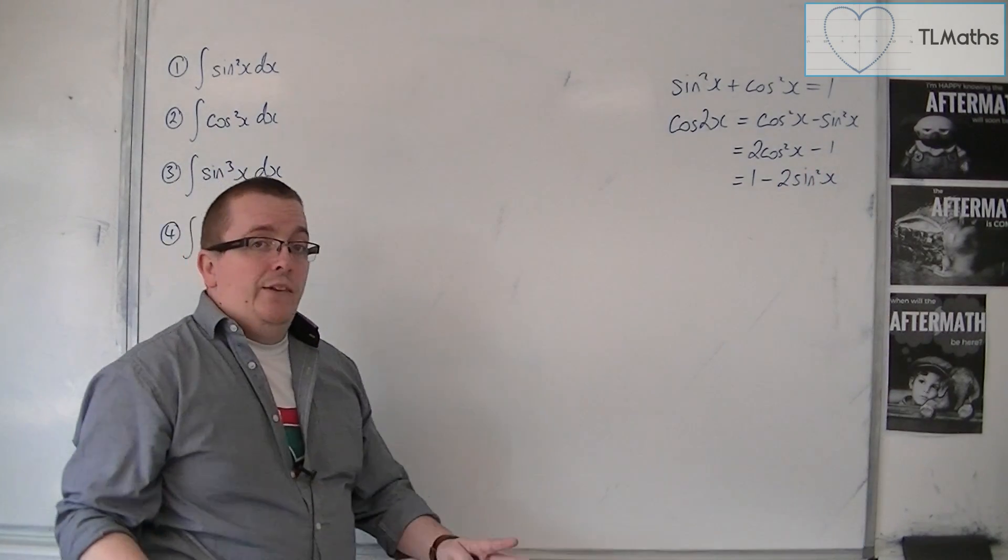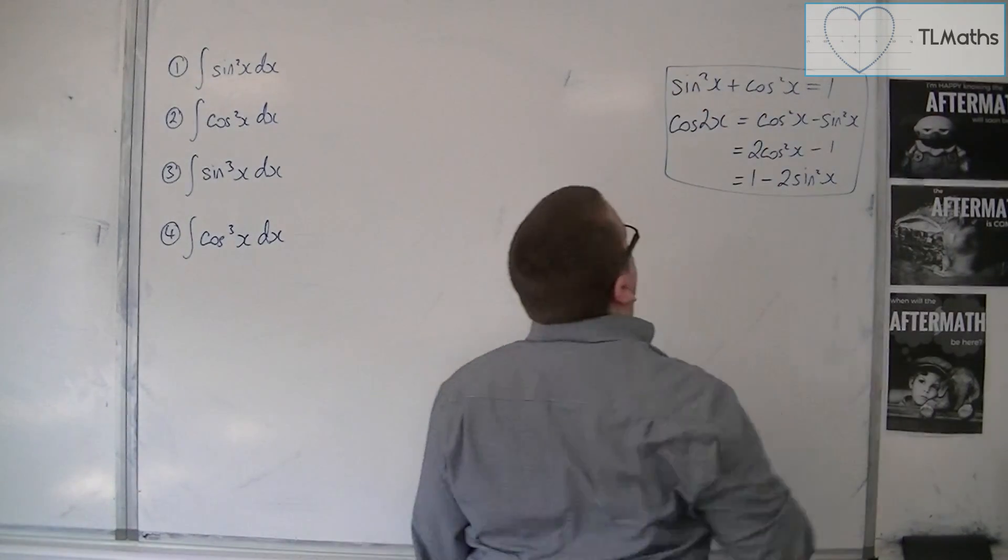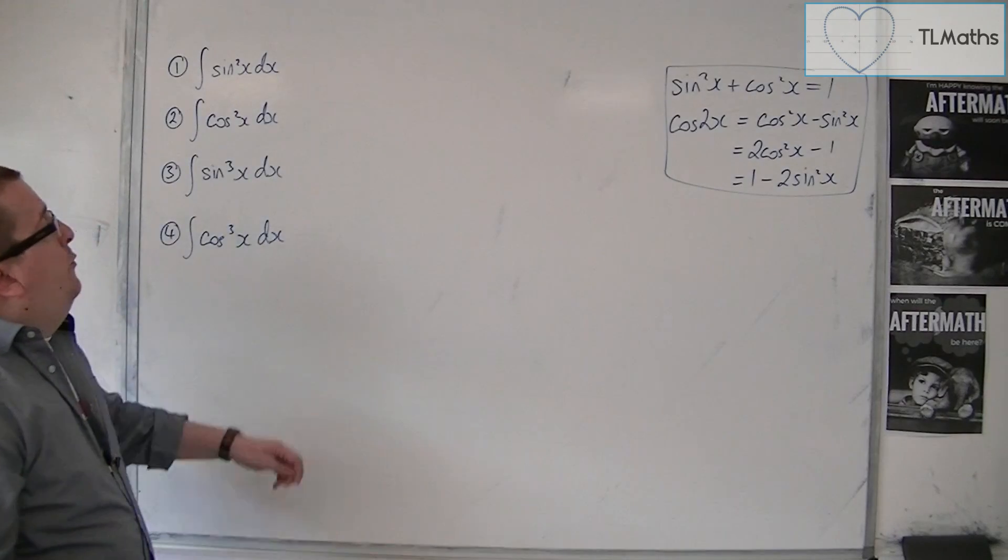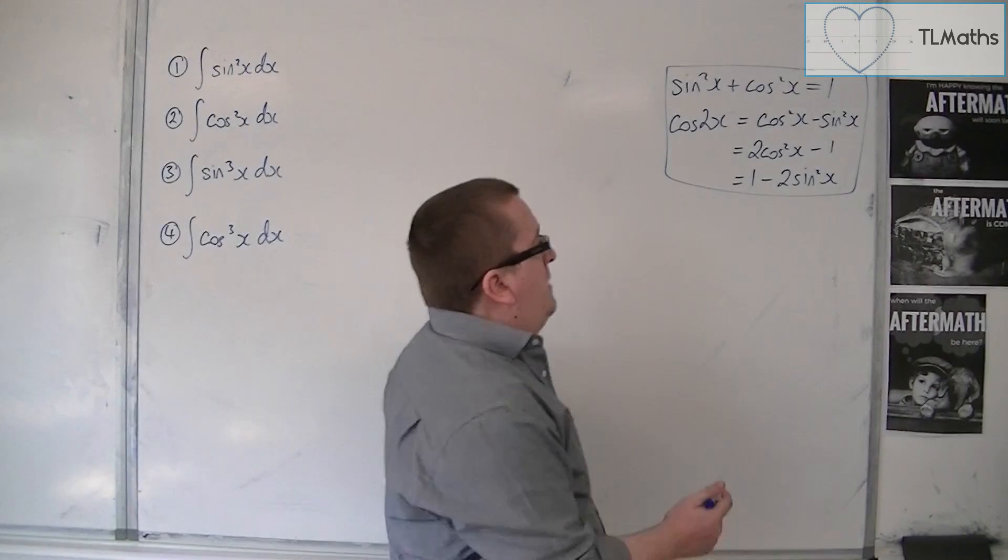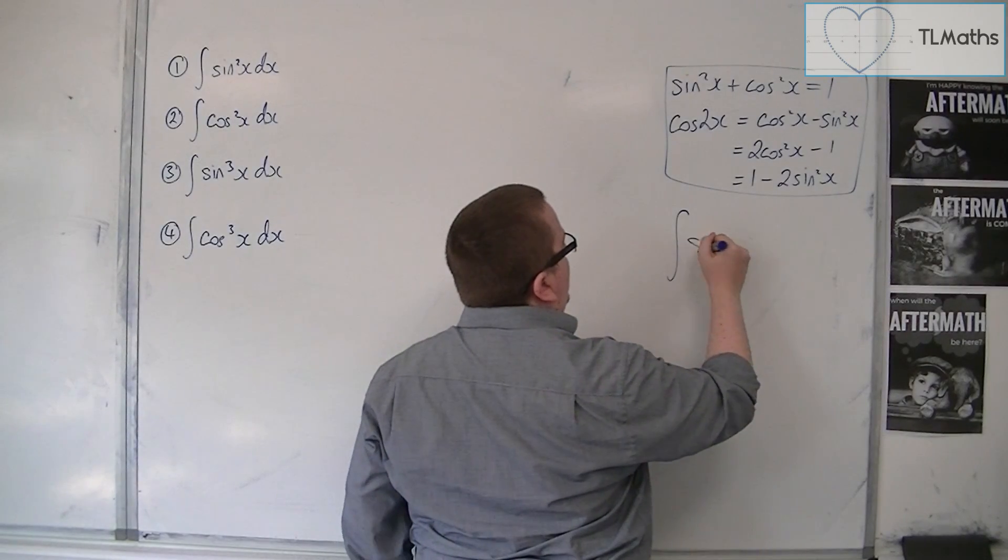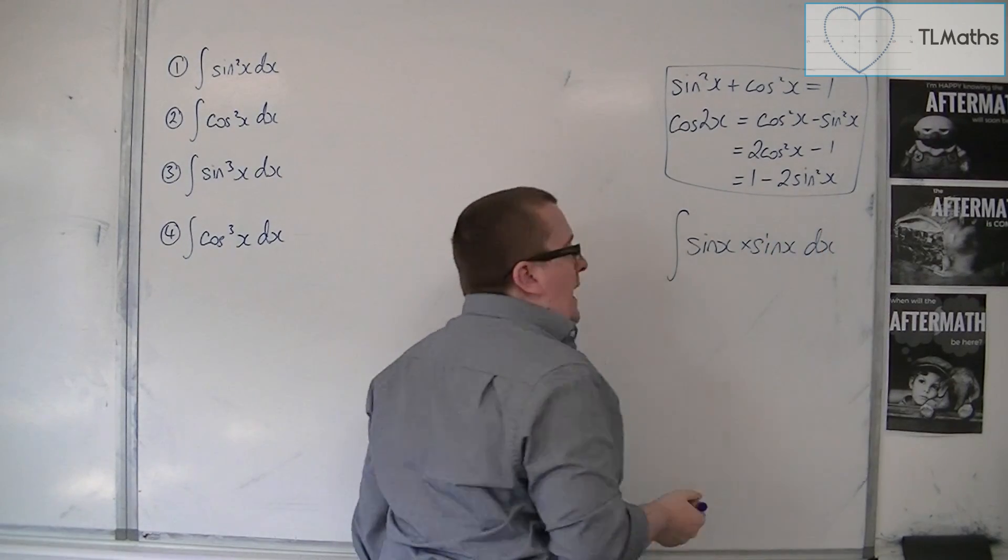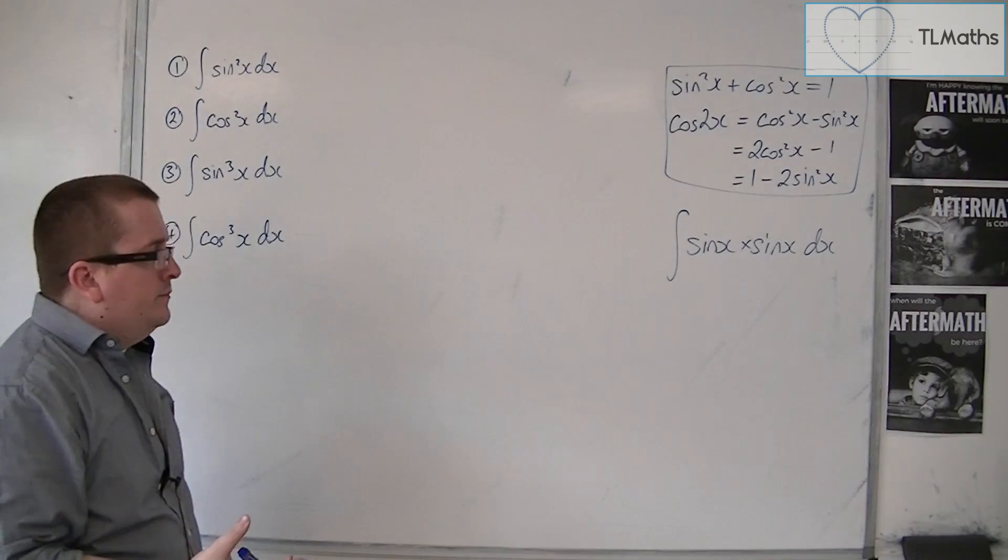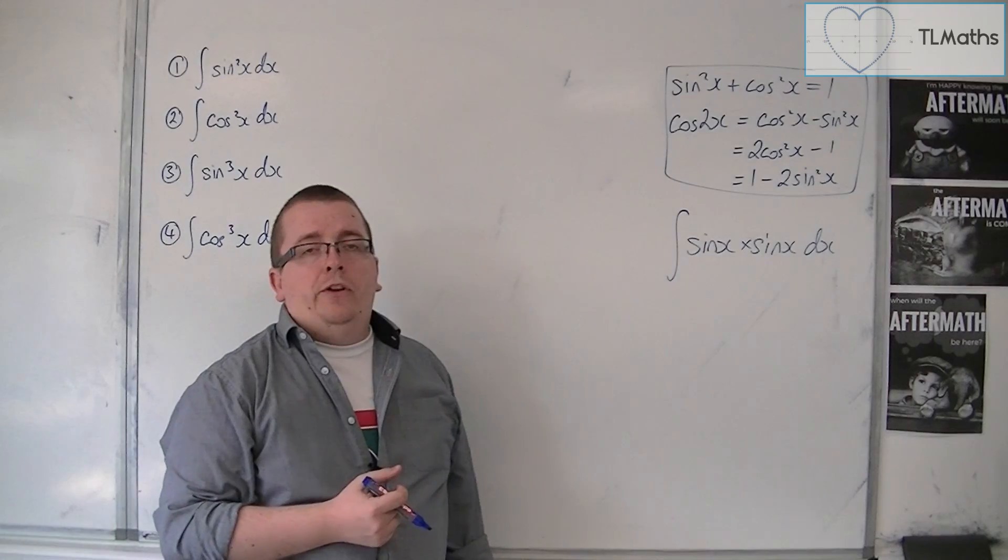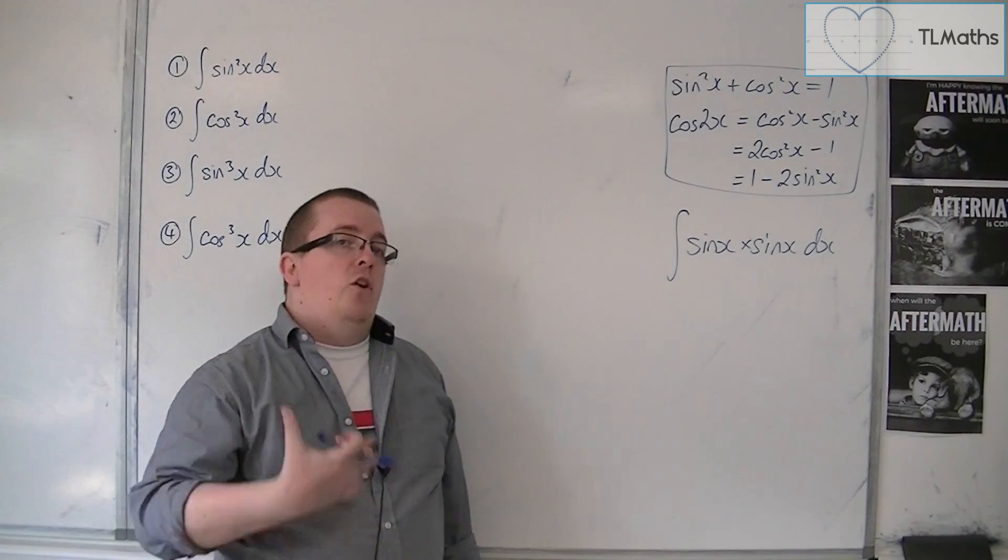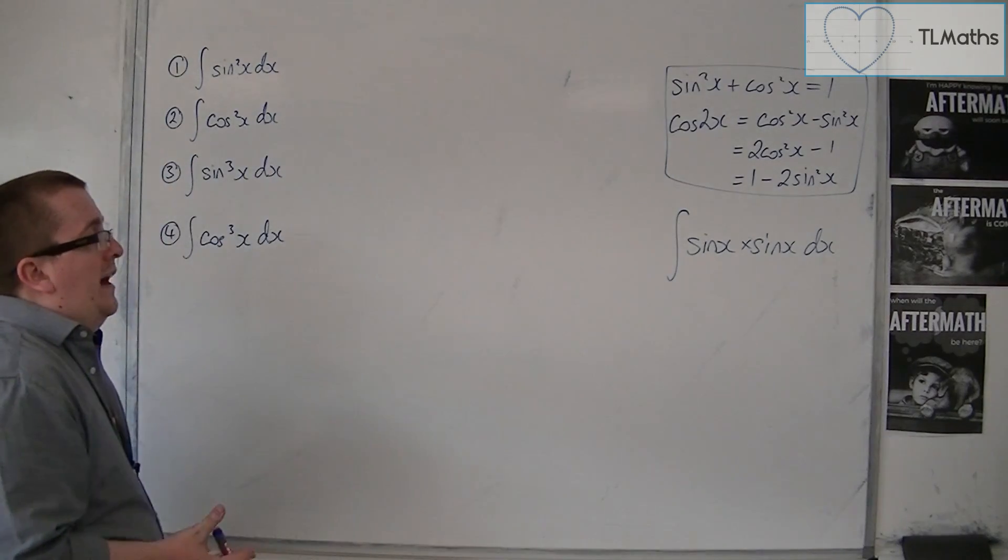So these identities that we must remember are going to become very useful. So if we start with number 1, integrating sine squared. A lot of people think that I can go immediately into writing this as sine x times sine x and then using integration by parts. There is a problem with integration by parts with sine squared because it keeps on going on and on and on forever. And it doesn't work out well for us.